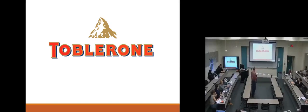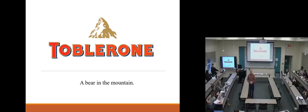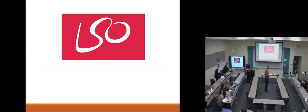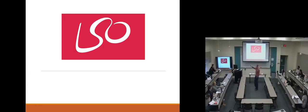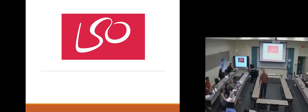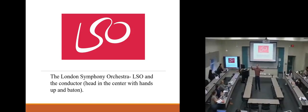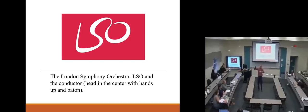Let's look at some fun examples. Toblerone — you see the mountain. What else do you see? The bear in the mountain — absolutely. I never saw the bear before either; I'll never unsee it now. Here's another logo — you see some letters: L, S, O. What does LSO stand for? In this case, LSO stands for the London Symphony Orchestra — you can see the conductor with their baton and the L, the S, and the O directing.